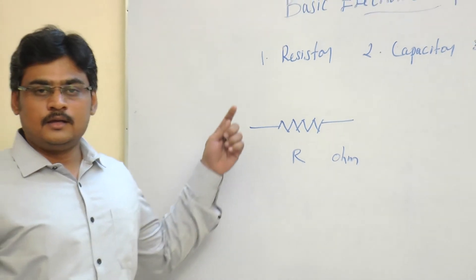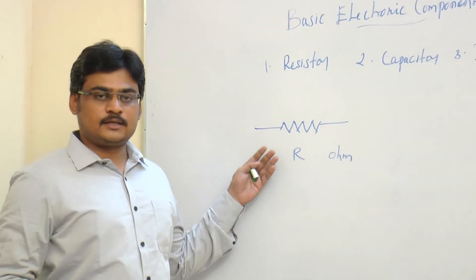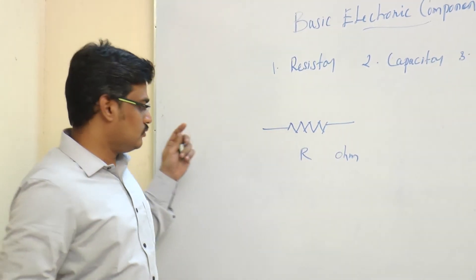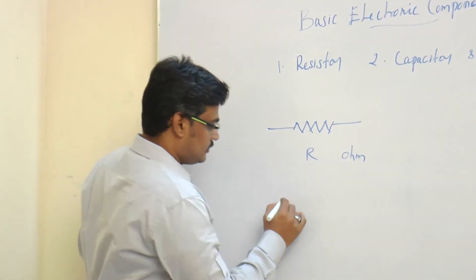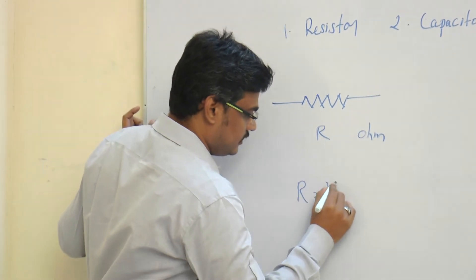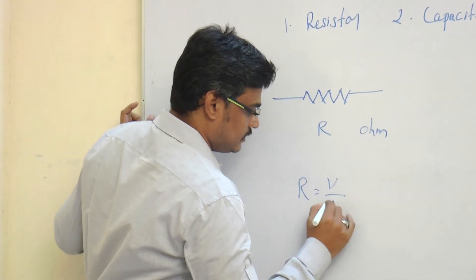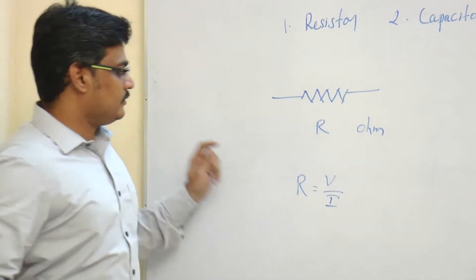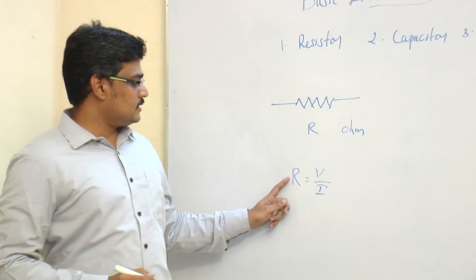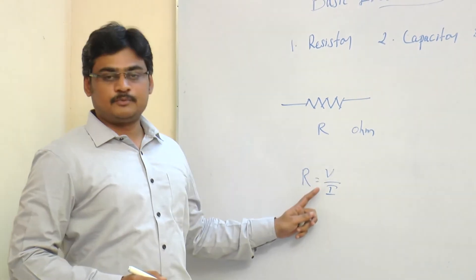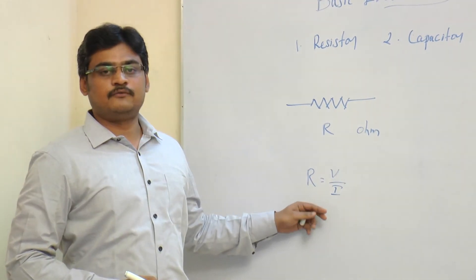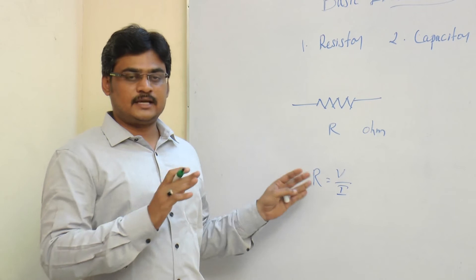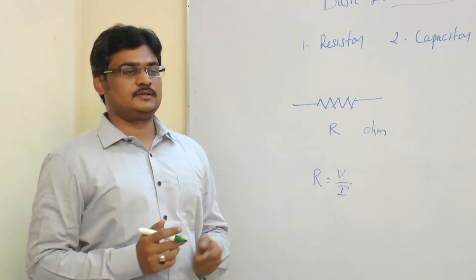The resistor can also be explained by Ohm's law, that is R is equal to V by I. This means that the resistance is inversely proportional to the flow of current — so both are exactly opposite.